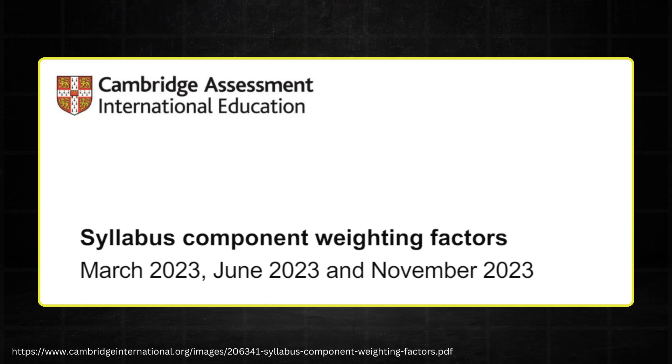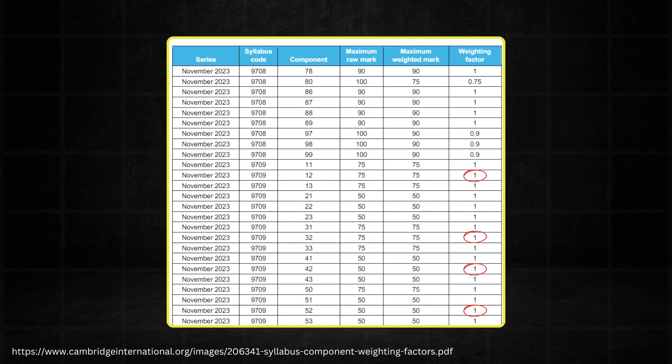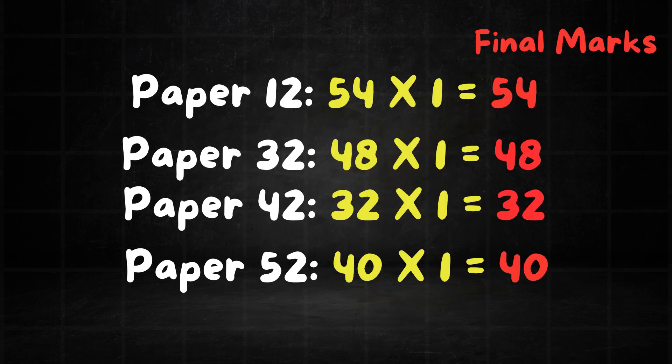You can find these on the CIE website. I've also linked them in the description. The weighting factors for our example all appear to be 1s. So multiply the raw mark for each component by 1. This gives us the final marks for each component.